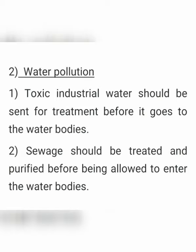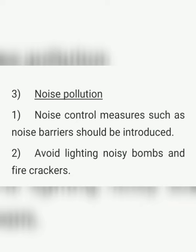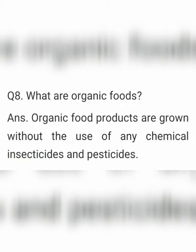Measures to control noise pollution: Point number 1 — noise control measures such as noise barriers should be introduced. Point number 2 — avoid lighting noisy bombs and fire crackers. Question 8: What are organic foods? Organic food products are grown without the use of any chemical insecticides and pesticides.